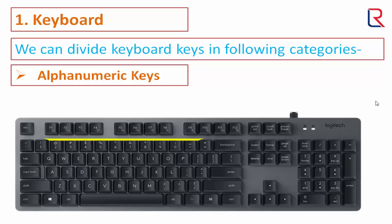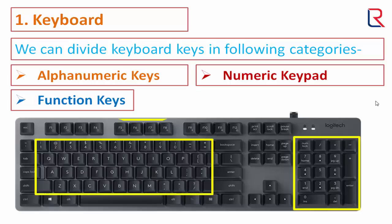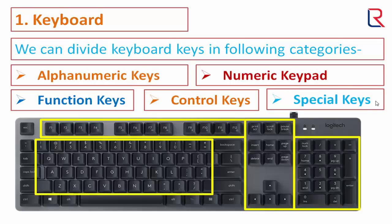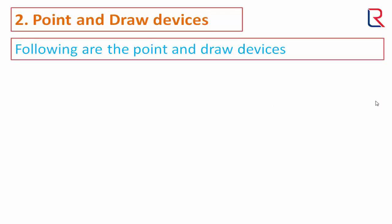Alphanumeric keys, which has all alphabets and numbers; numeric keypad, which has all numbers and some operators like plus, minus, asterisk, slash; function keys from F1 to F12; control keys like Page Up, Page Down, Insert, Delete, and all arrow keys; and some special keys like Enter key, Control key, Alt key, Windows key, etc.